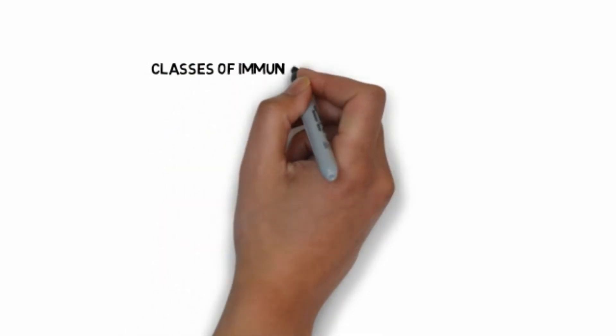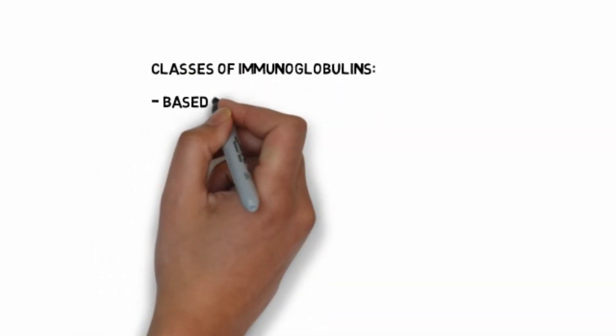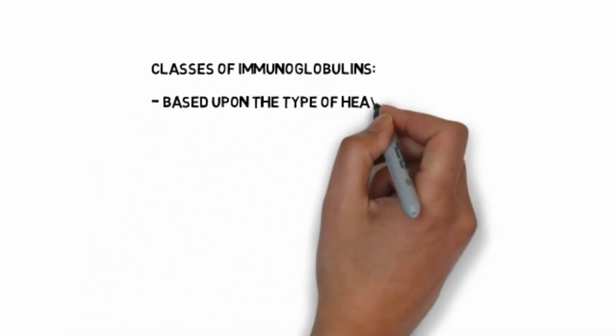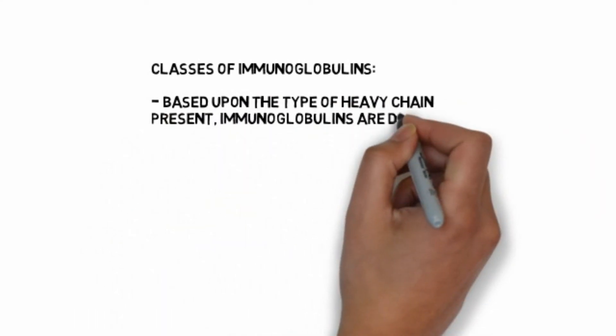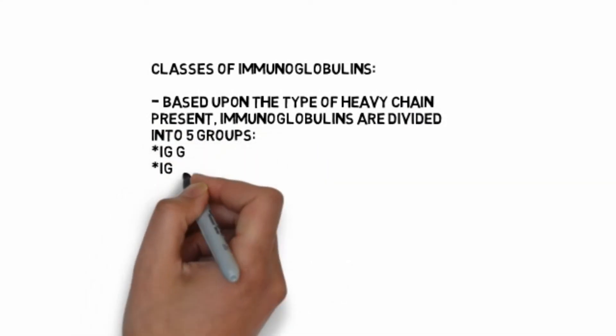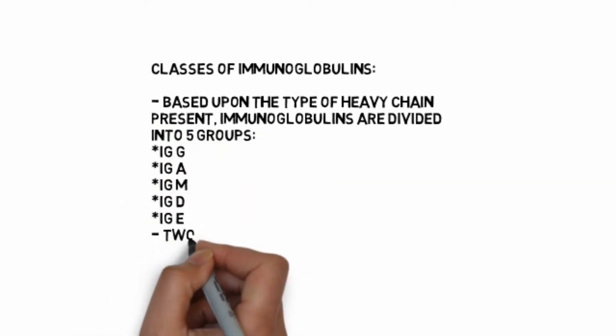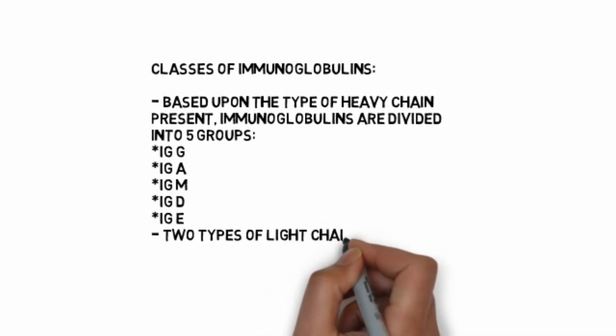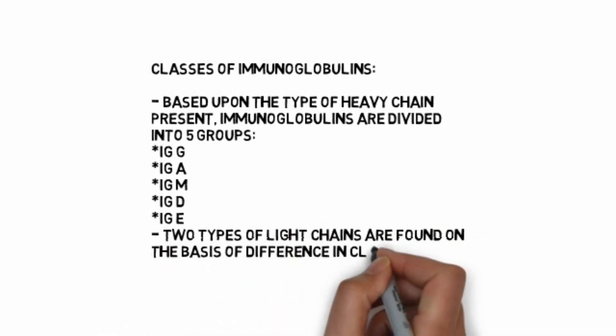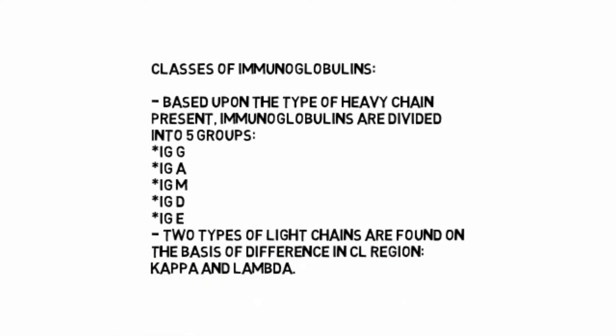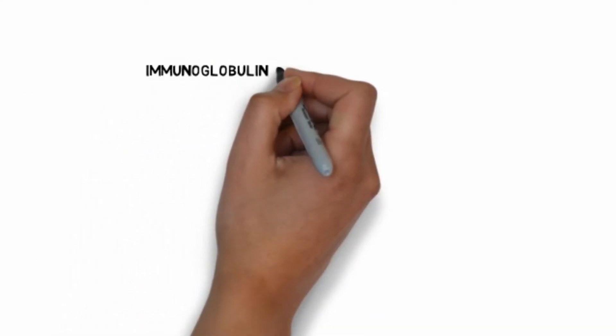Binding of variable regions of light and heavy chain to the antigen is due to specific amino acid sequence in it. Classes of immunoglobulins: based upon the type of heavy chain present, immunoglobulins are divided into five groups. IgG contains gamma heavy chain, IgA contains alpha heavy chain, IgM contains mu heavy chain, IgD contains delta heavy chain, IgE contains epsilon heavy chain. Two types of light chains are found on the basis of difference in CL region: kappa and lambda.